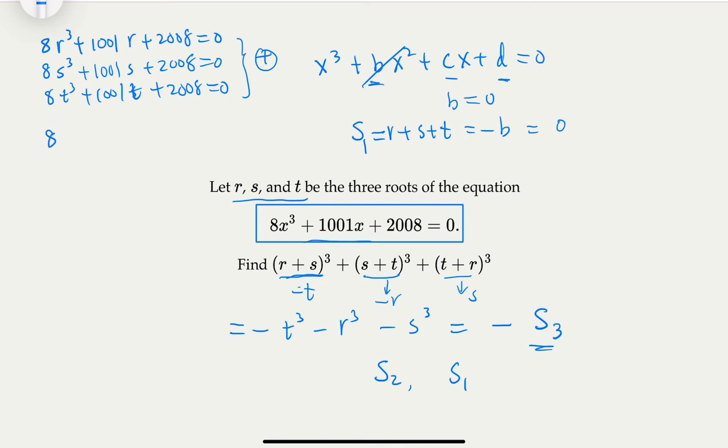You get 8, and then when you add them up, that's exactly S₃, what we're looking for. And then the second term here is 1001 times r plus s plus t, which is S₁, and then there's 3 times 2008. So great. So that equal to zero.